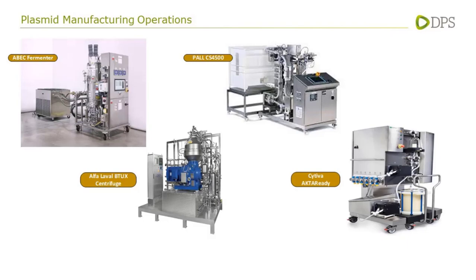Stainless steel equipment obviously requires CIP and SIP, which is not desirable if the intention is to provide a fully single-use facility. One alternative currently being implemented by certain manufacturing companies is the use of a TFF system instead of a centrifuge: the intracellular product is held on the retentate side, and the permeate liquid goes to waste to concentrate the product. This is proving to be an effective alternative to the centrifuge, and by replacing the centrifuge with TFF, it is possible to implement a single-use system to assist with a fully single-use manufacturing train.